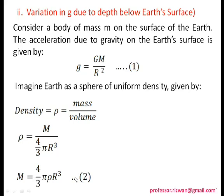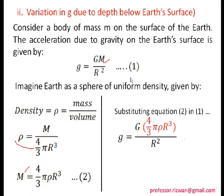Substituting M = (4/3)·π·R³·rho into g = GM/R², the R³ and R² simplify to leave one R, giving g = (4/3)·G·π·rho·R. This is the gravitational acceleration at the earth's surface expressed in terms of density. Now consider a body at point P at depth D below the surface. The original earth has radius R and mass M. Going to depth D reduces the effective radius to R − D.